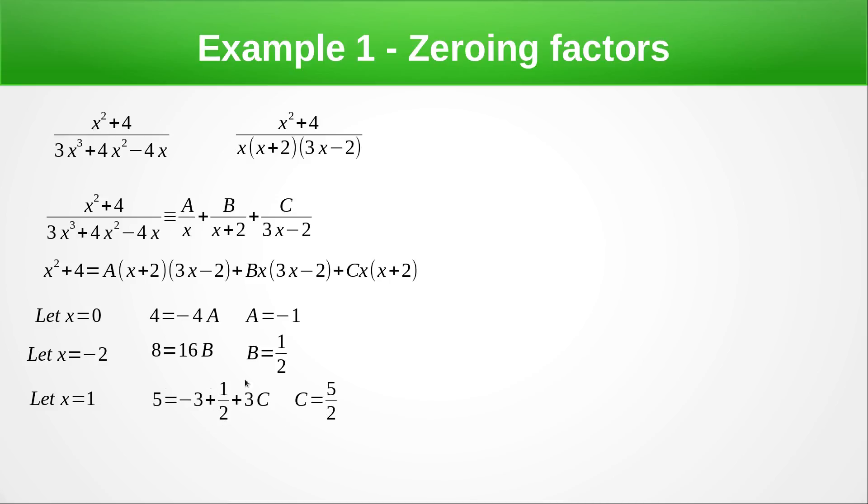We're now going to put these three values back into this expression here and we've got -1/x + 1/(2(x + 2)) + 5/(2(3x - 2)).